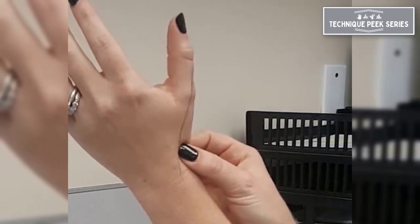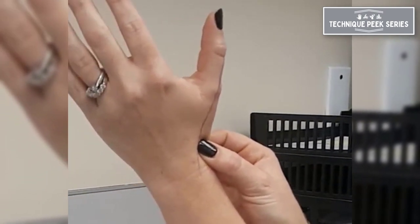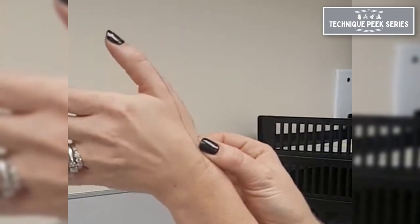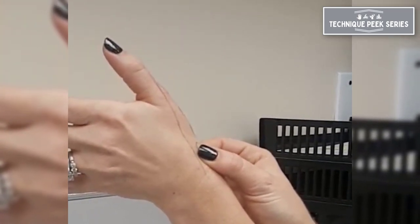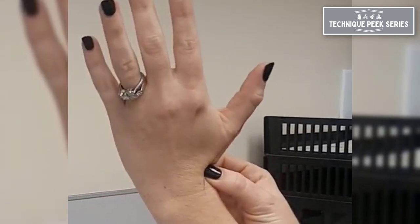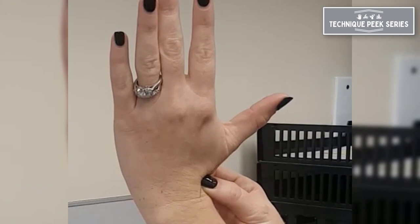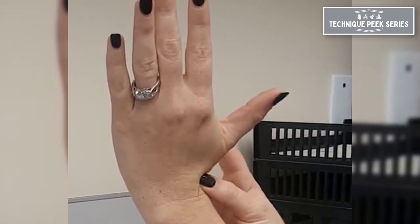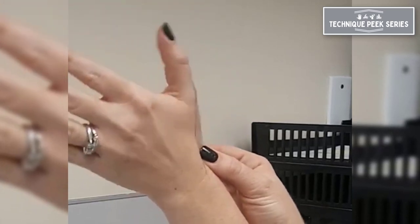So with our index finger over that scaphoid, our thumb over the scaphoid on the dorsal side in our anatomical snuff box, what we're going to do is have the patient shift from ulnar deviation, where you'll feel that scaphoid dorsally come up into that snuff box,